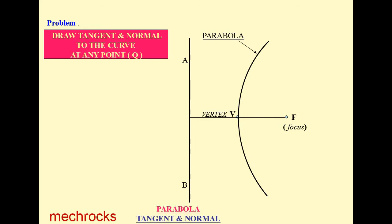Now we have to draw the tangent and normal to this parabola at any point on the curve. Take some point - I am taking a point here and naming it Q. Now we have to draw the tangent and normal to this parabola at Q.